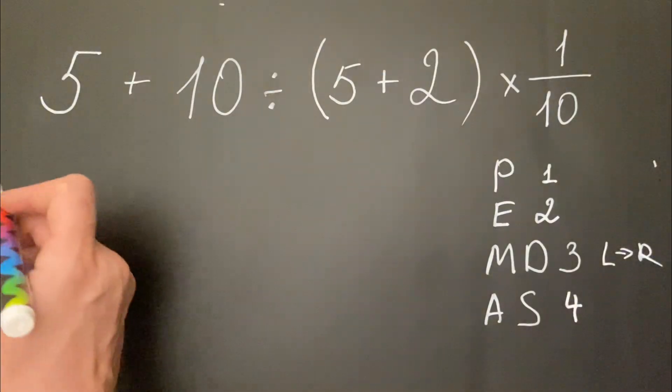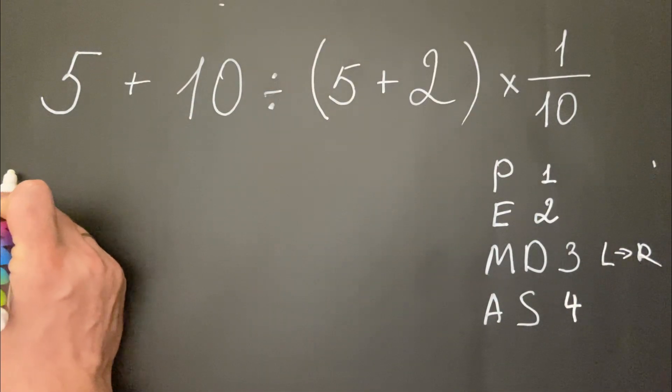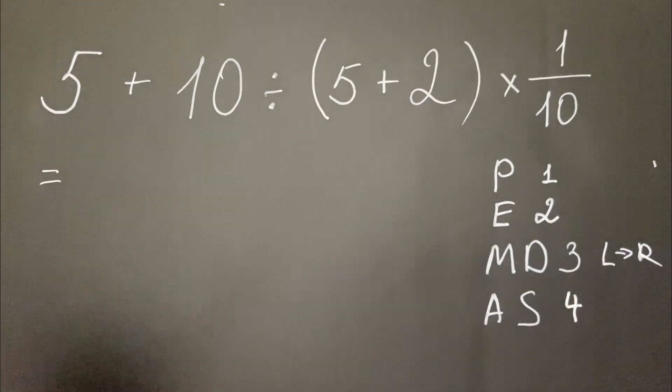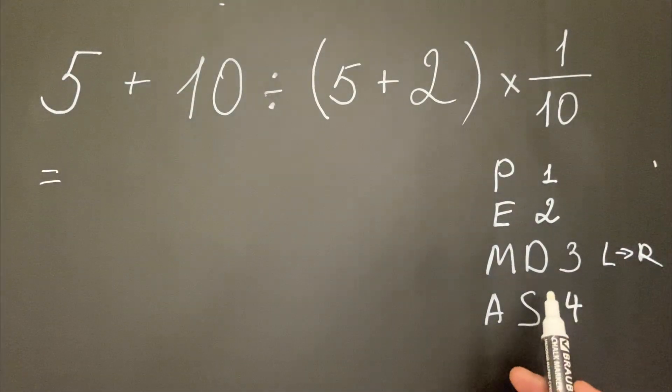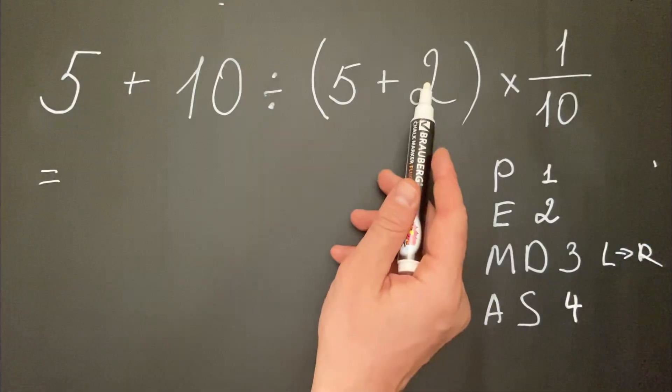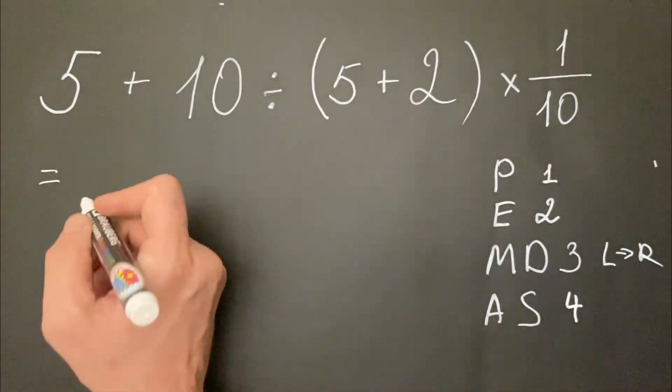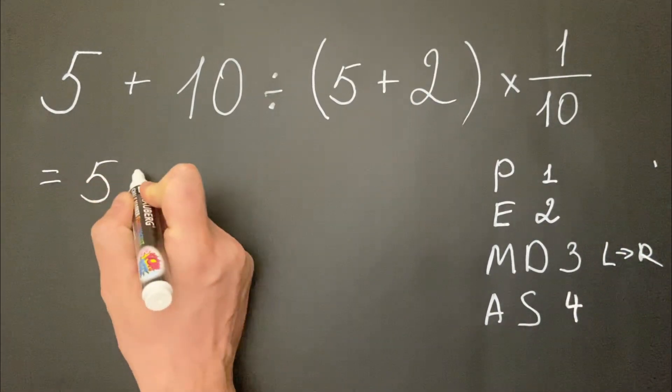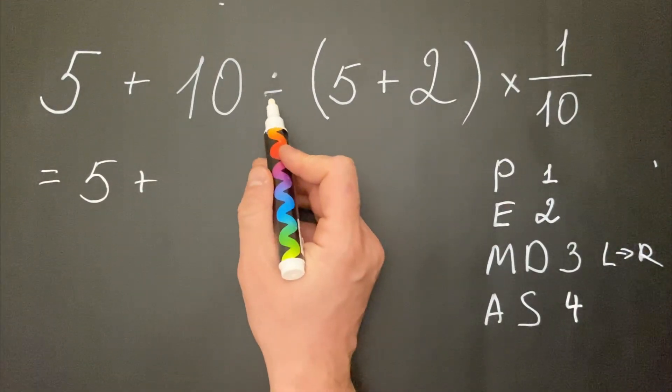Okay, this said, we can go and solve the equation. As we said, we do first what's inside the parentheses. We have 5 plus 2 equals 7. So we have 5 plus, and this can also be written as a fraction.